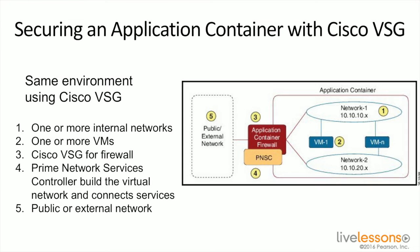You also have the ability to use a secure application container with Cisco's Virtual Security Gateway. VSG provides segmentation. In this situation, we've got one or more internal networks and one or more virtual machines, just like before. But here we use the Cisco Virtual Security Gateway for firewall services, with the Prime Network Services Controller built into the solution to control how the VSG functions. I could also use a physical firewall if I chose.